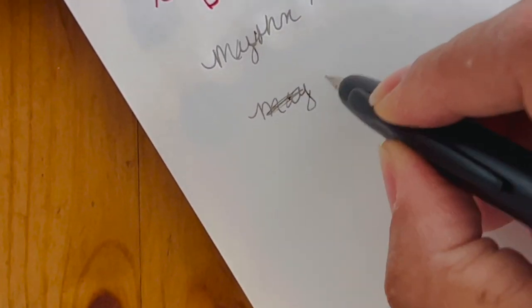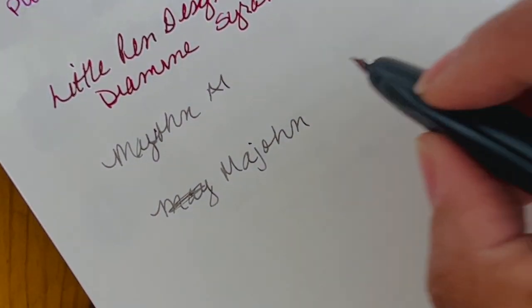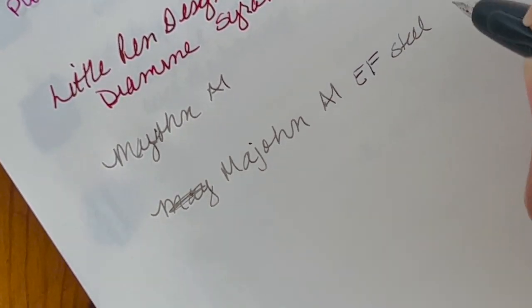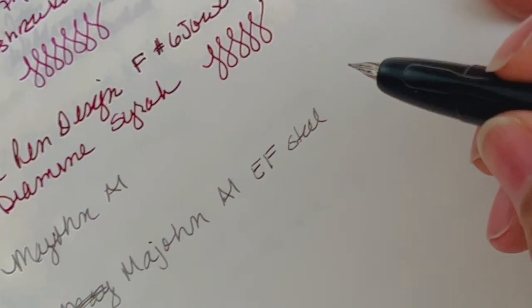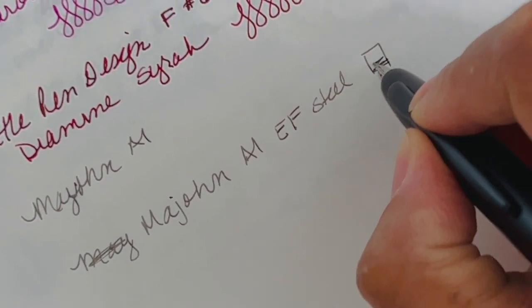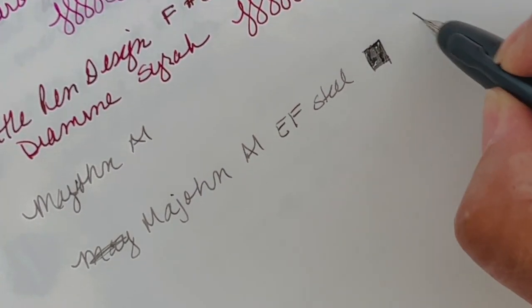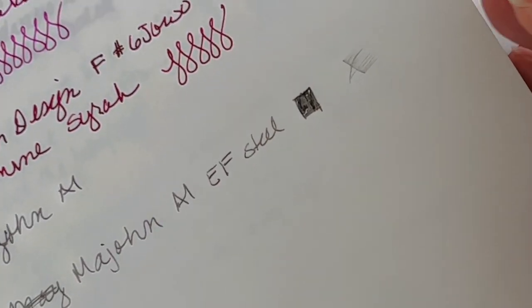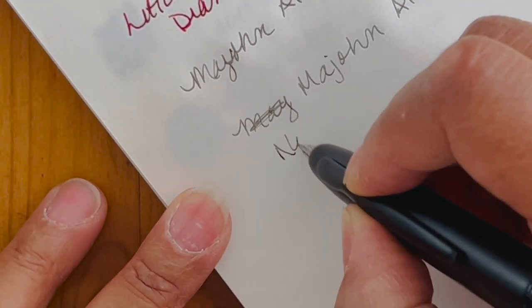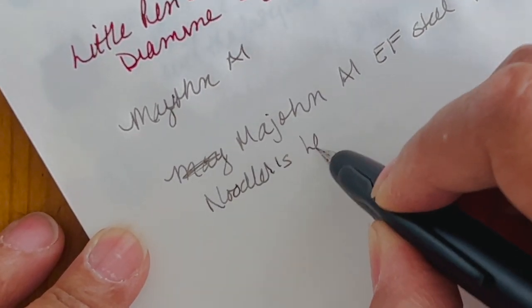M-A-J-O-H-N, Majohn. This is the A1. I have this in an extra fine, it's a steel nib. For an extra fine pen, this is writing buttery smooth, unpleasantly surprised. Now I can understand what the hype was about. I'm writing with Lexington Gray ink from Noodler's, so it's extremely dry on Tomoe River paper. This is Noodler's Lexington Gray.